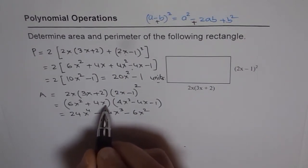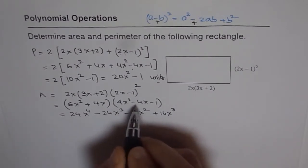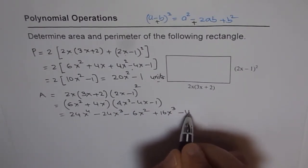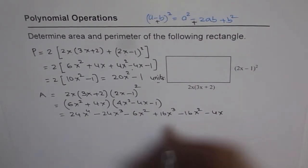When you multiply with 4x, you get plus 16x cubed, minus 4 times 4 is 16x squared. And 4x with minus 1 gives you minus 4x.